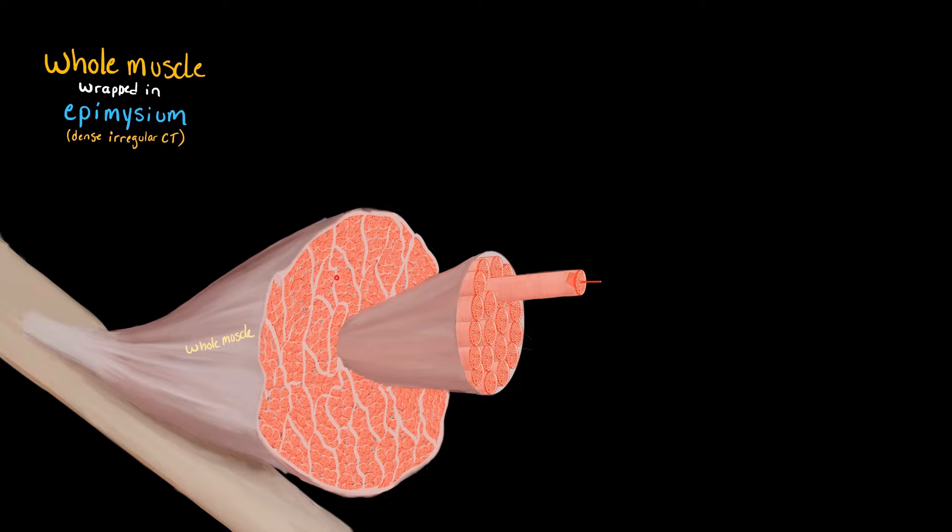Then each whole muscle contains many individual bundles. Those bundles are called fascicles, and they are wrapped in a layer of connective tissue called the perimysium, which is also dense, irregular connective tissue.